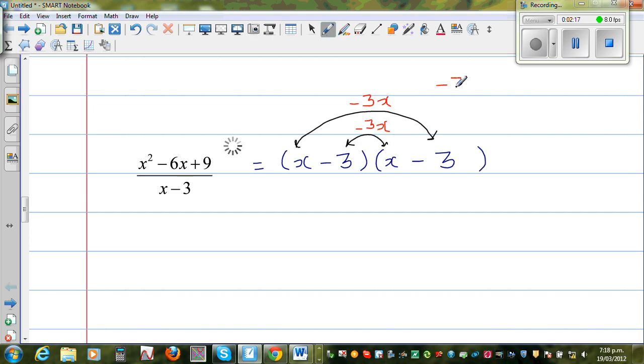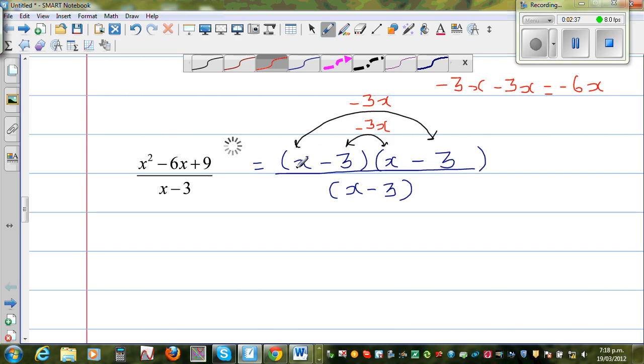And it's always good to write, if you can't do it mentally, it's good to write like this. Minus 3x minus 3x is minus 6x. And that's what we want as the middle term. So the denominator is x minus 3. The denominator is x minus 3. So this x minus 3 and x minus 3 gets cancelled. So what remains is x minus 3. Just like that.